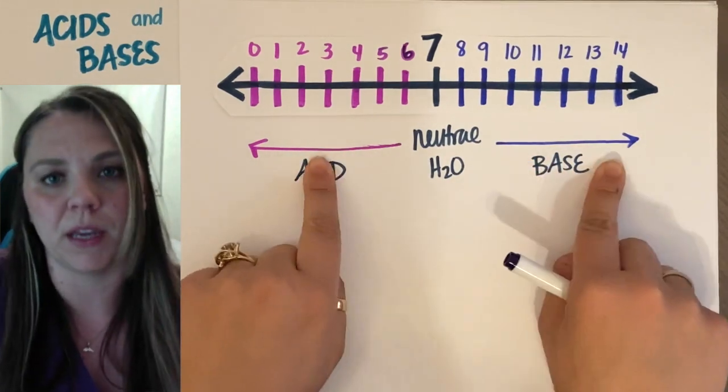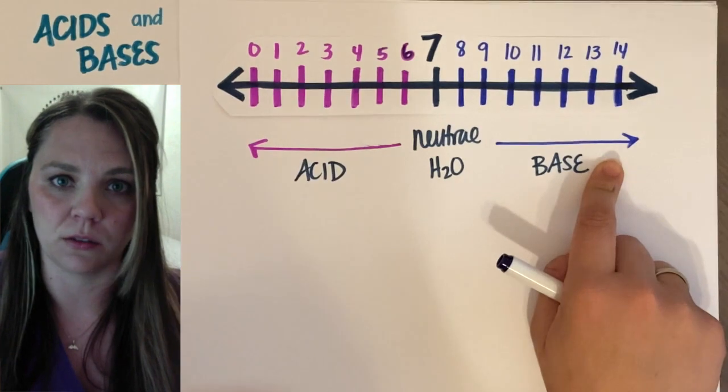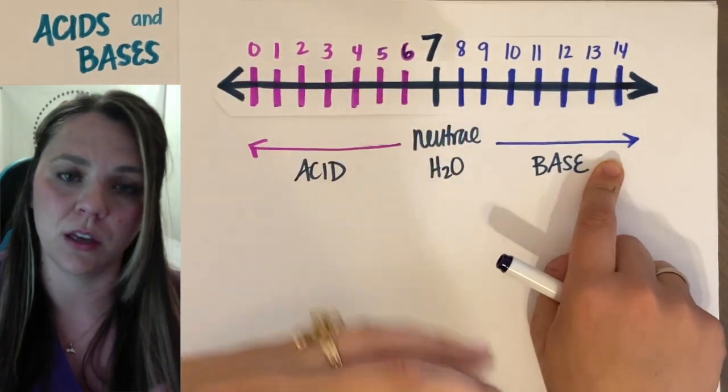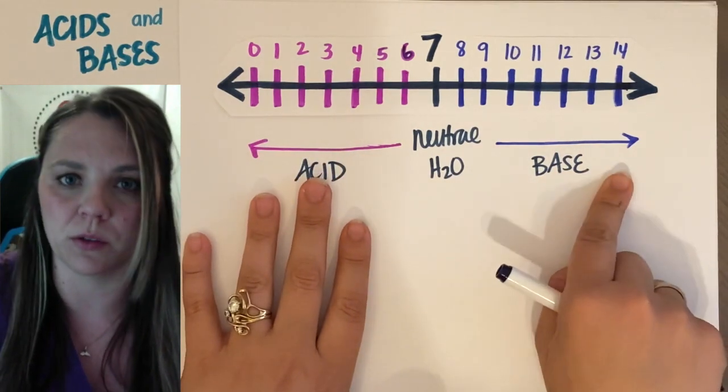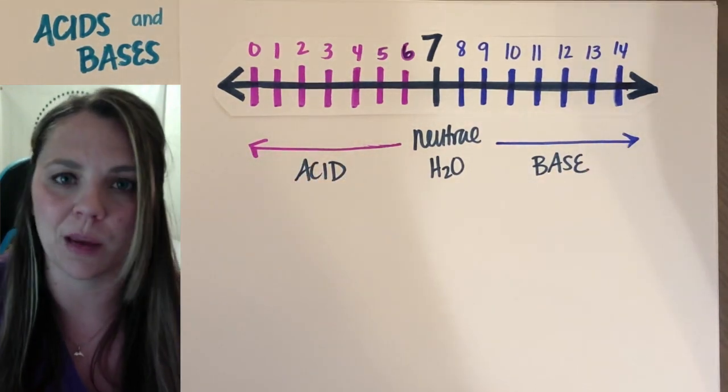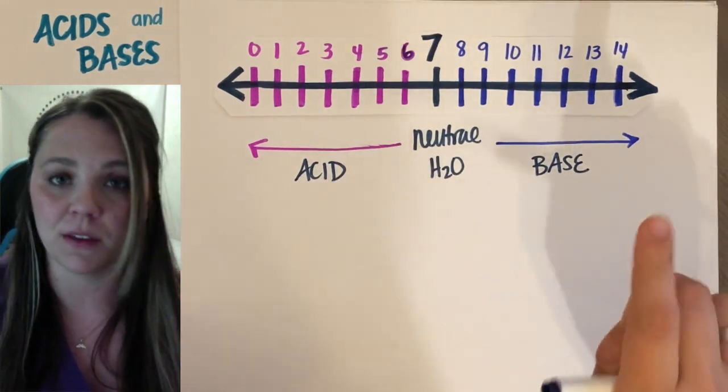So pink and blue, or red and blue, if you had litmus paper and you used your litmus paper in a solution, if it was red or a pink color, that would mean it was acidic. If it was blue, it would mean it was basic. So just trying to hammer that into your brain as well.